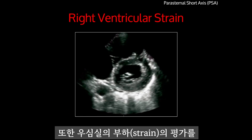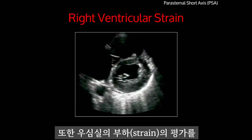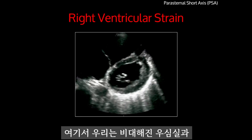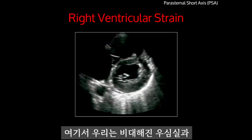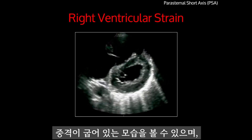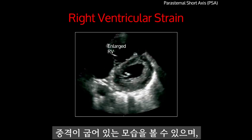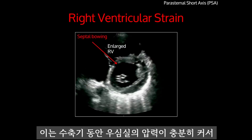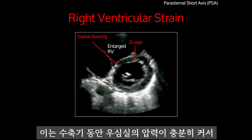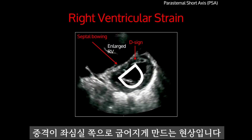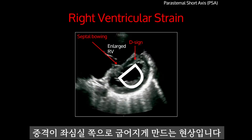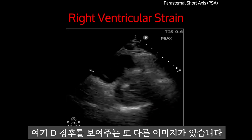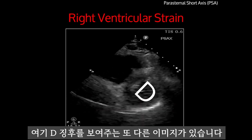You can also assess for right ventricular strain in the parasternal short axis view. Here, we see an enlarged RV and septal bowing showing the D sign, where the pressure of the right ventricle is great enough during systole to cause the IVS to bend in towards the LV. Here's another image demonstrating the D sign.